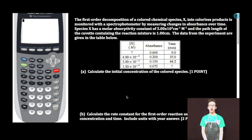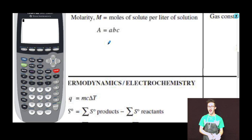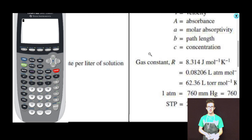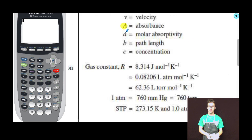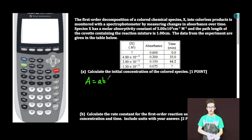Part A: Calculate the initial concentration of the colored species. To answer this question, I'm going to go to my handy dandy formula chart and find Beer's Law. If you're confused about what all those variables mean, recognize that you're given that information not too far away. A equals A, B, C. Easy as one, two, three. We are looking for concentration, which is going to be C.